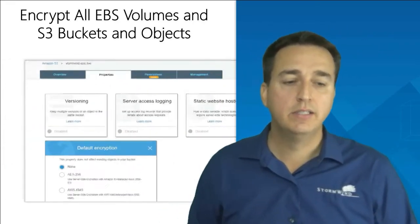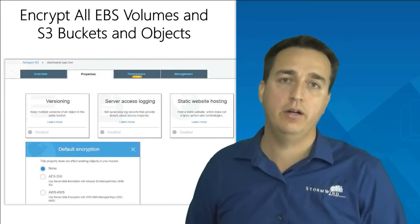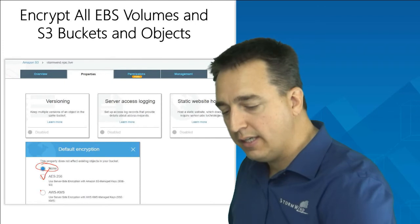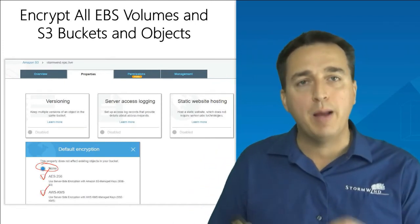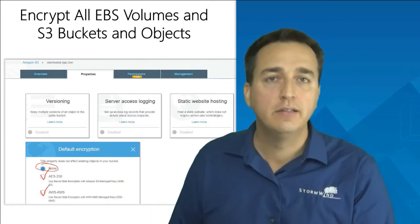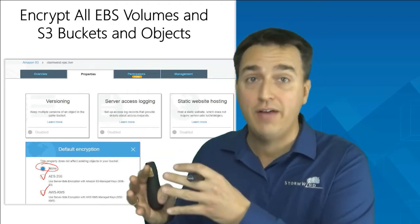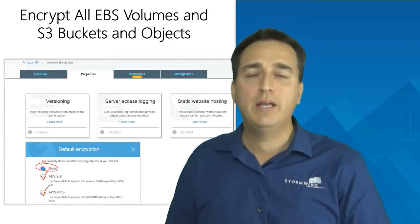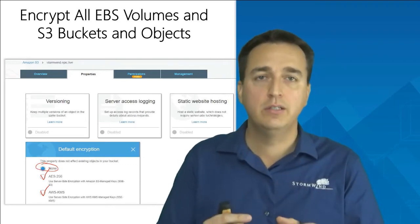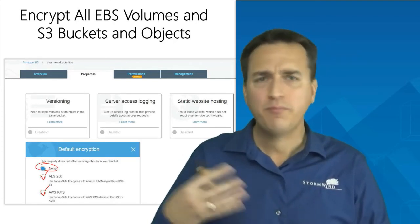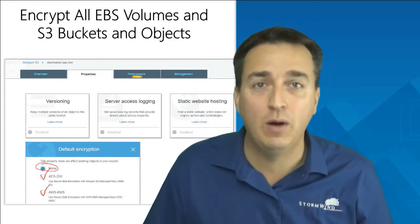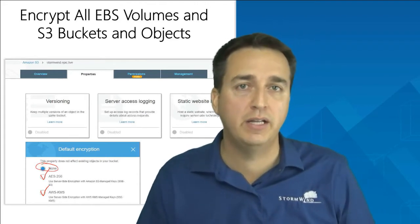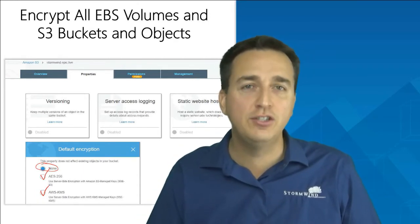With S3 buckets, encryption is not on by default, but we can turn it on by going to the properties of the bucket and turning on encryption. By default there's none, but I can choose AES-256 or AWS-KMS. By enabling encryption on objects in the bucket, if anybody gets unauthorized access to those objects, they won't be able to read that information. With the right level of encryption, it might take a hundred or a thousand years to decrypt — making that information useless by then.